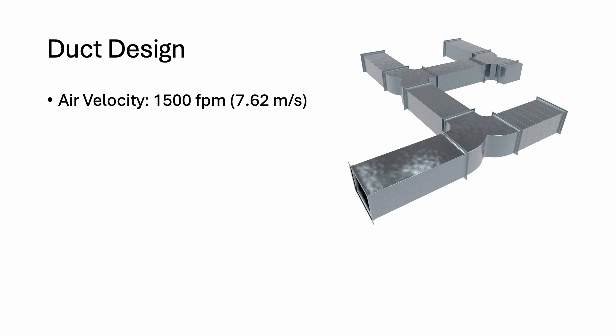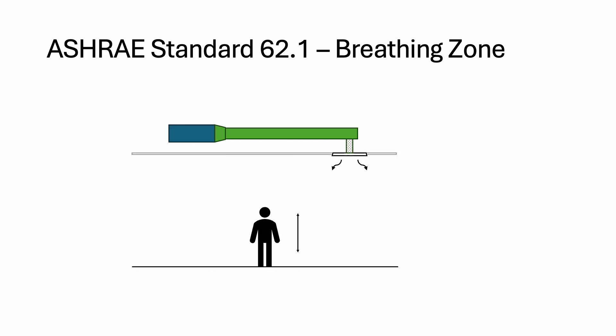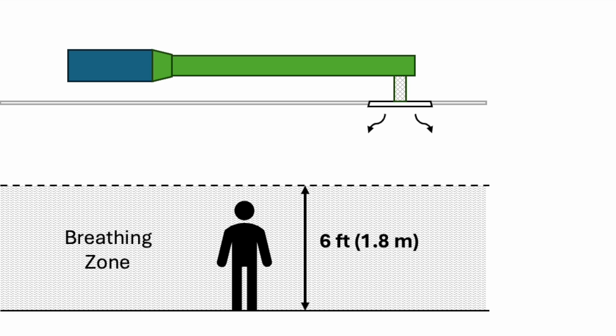According to ASHRAE standard 62.1, 6 feet or 1.8 meters from the floor is defined as the breathing zone. To ensure occupant comfort, the supply airflow must be at a velocity between 50 and 100 feet per minute before entering the breathing zone.